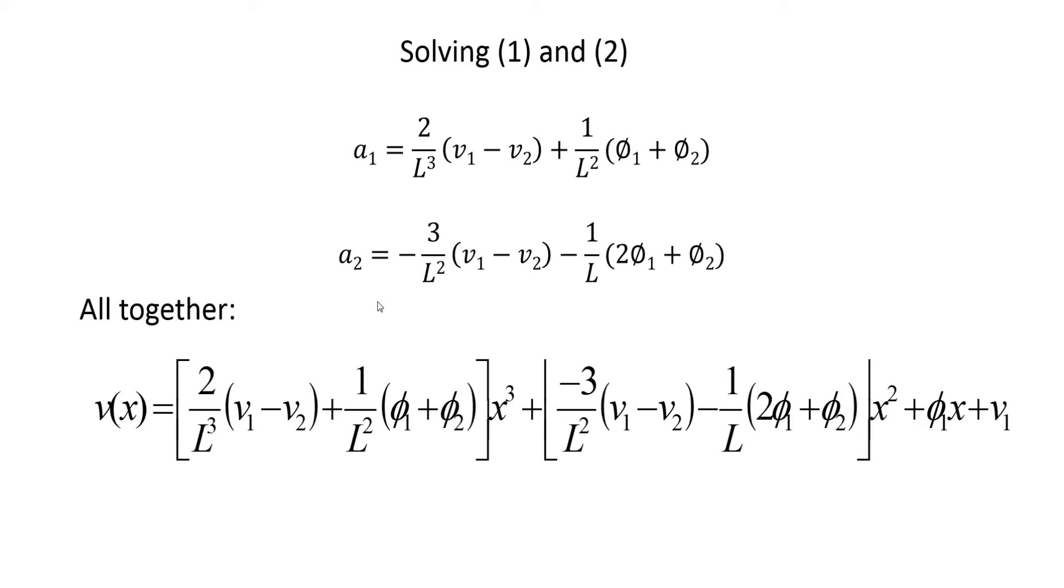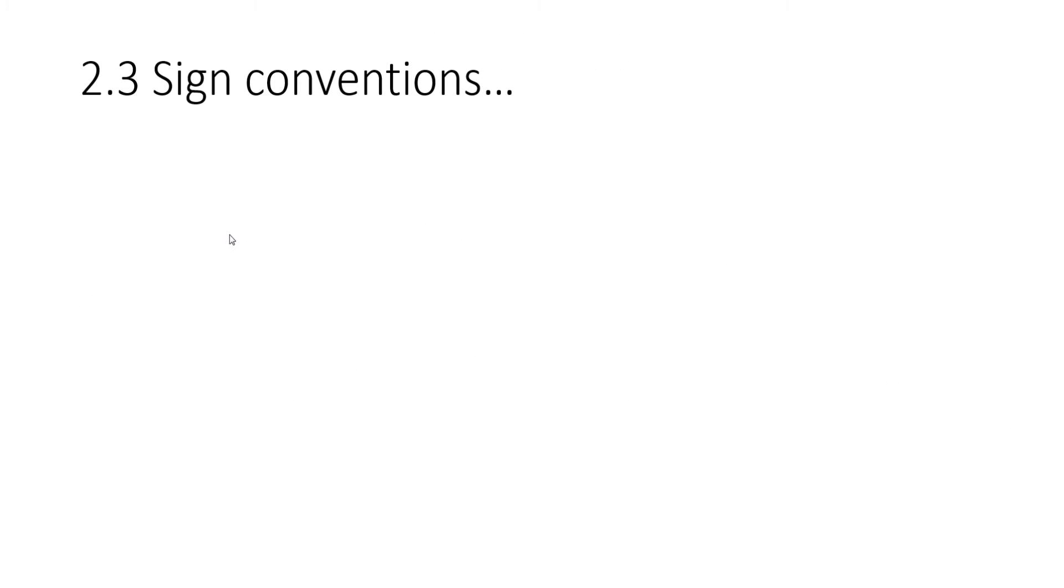But firstly I need to speak about sign conventions. From beam theory, the sign convention is typically something like this, where at node 1 the positive shear force or vertical force is upward and node 2 is downward, and the moment is clockwise at node 1 and anti-clockwise at node 2.